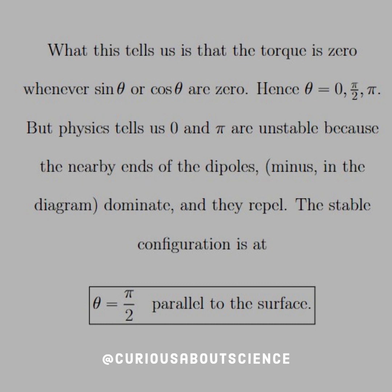What this tells us is that the torque is 0 whenever sine or cosine are 0. Hence, θ equals 0, π/2, and π. The reason that we have to use a little bit of induction is that the physics tells us that θ equals 0 and π are unstable because the nearby ends of the dipole, the minus in the diagram, dominate and they repel. So they're going to want to push each other into a stable configuration.